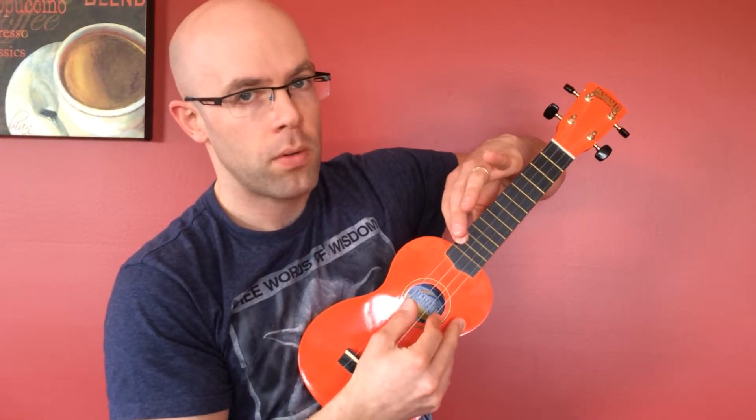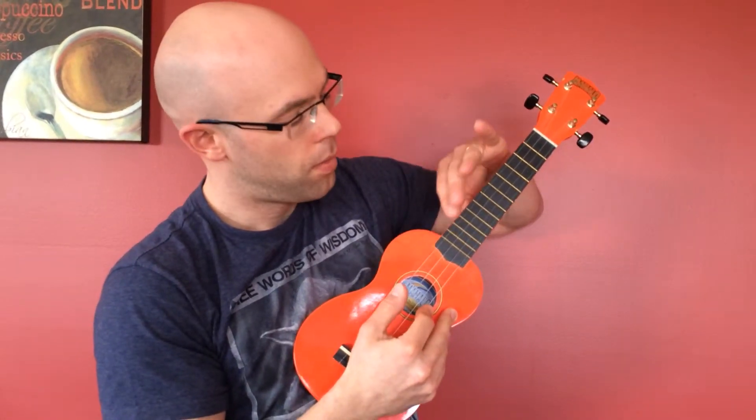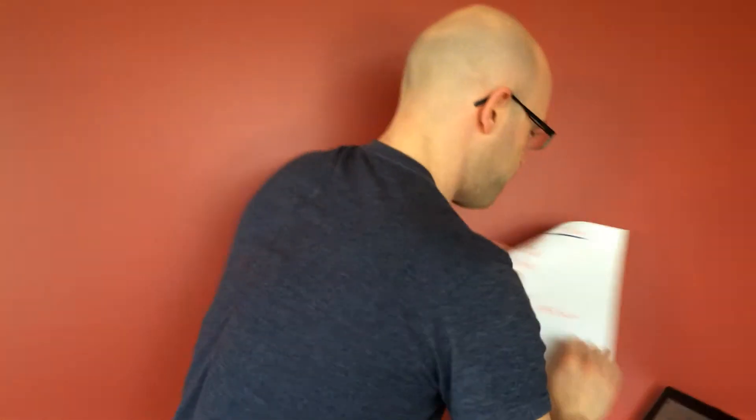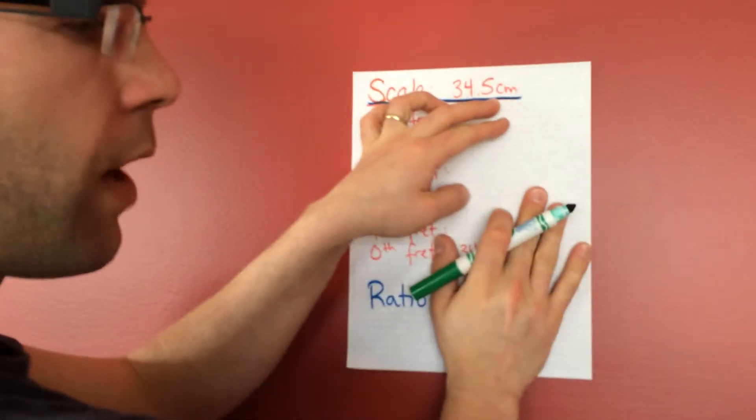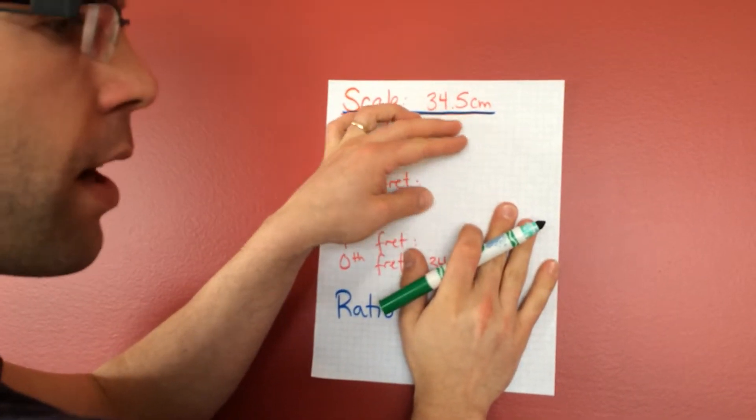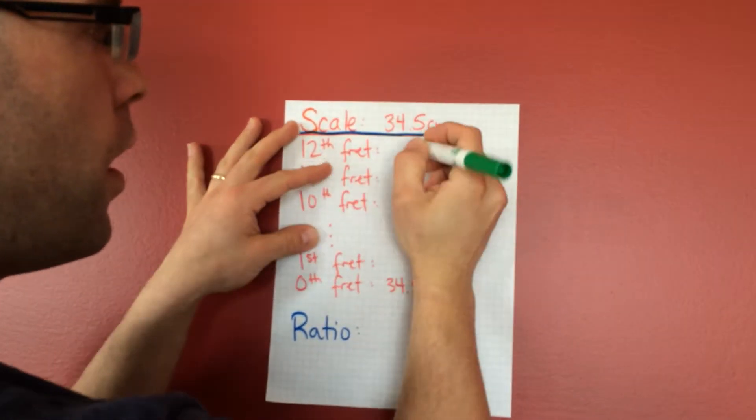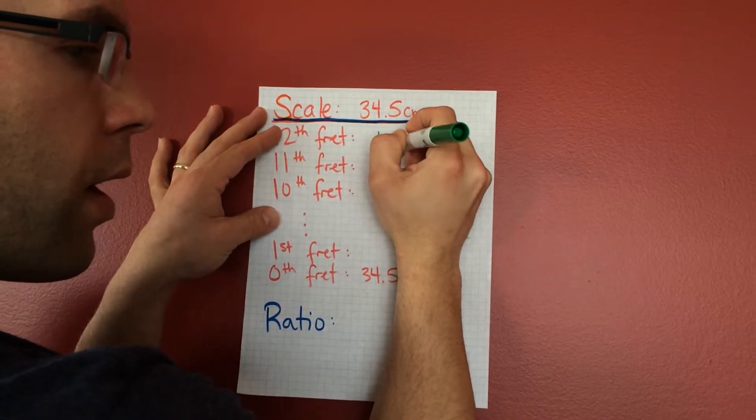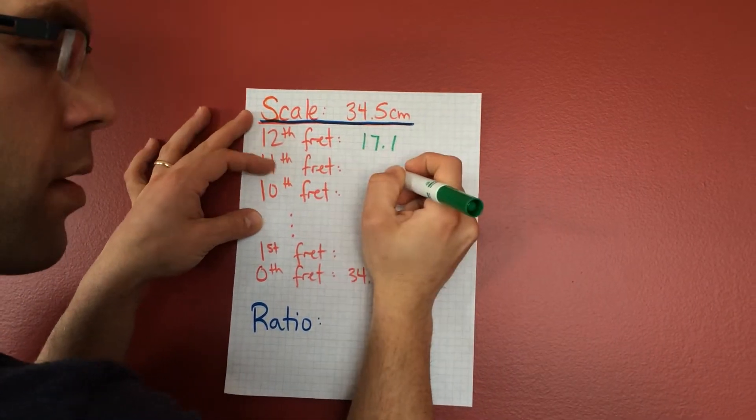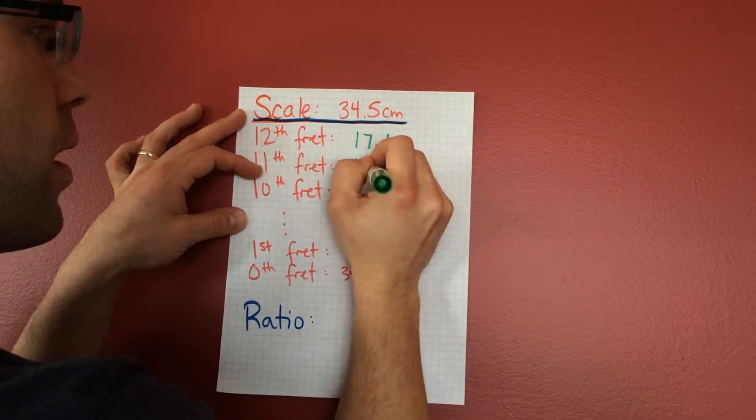And so if I measure this one, we're going to get the same kind of thing happening. So this one, the entire scale is 34.5 cm. It's about half the size of the guitar. The 12th fret is about half that distance. When I measure it, I get 17.1 cm. The 11th fret is 18.1 cm.